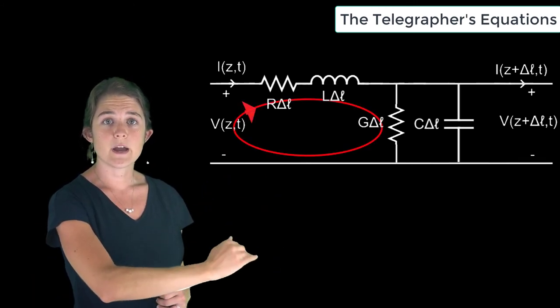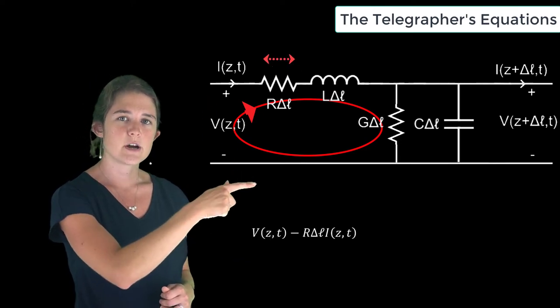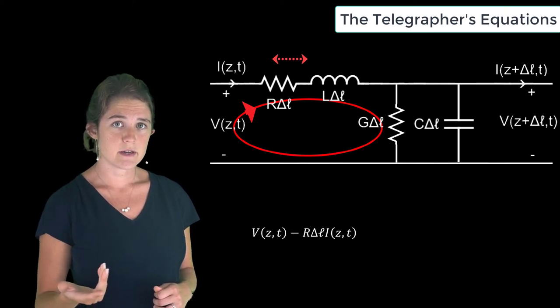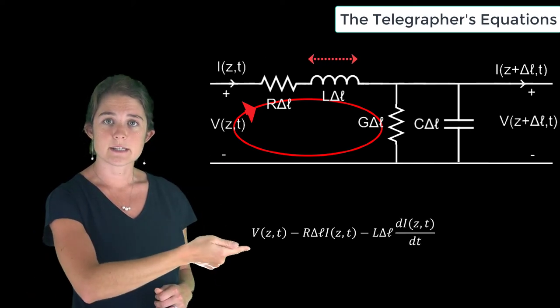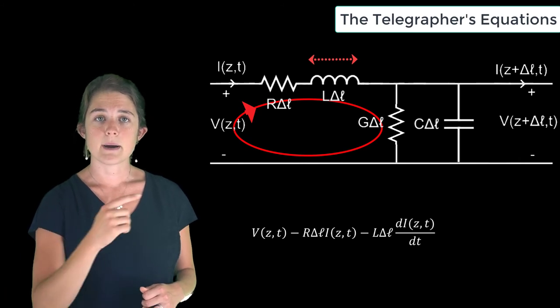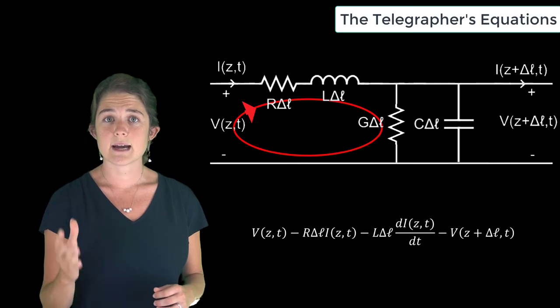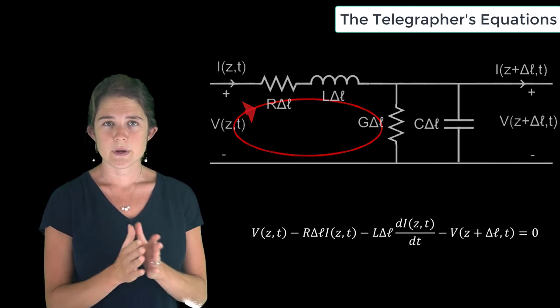Going around clockwise, we have the input voltage V(z,t) minus the voltage drop across the resistor, which is resistance times current, minus the voltage drop across the inductor, which is inductance times the time derivative of current, minus the output voltage. By Kirchhoff's voltage law, this has to equal zero.